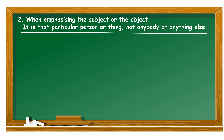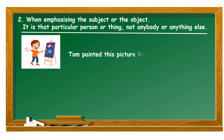The second reason to use a reflexive pronoun is when we want to emphasize the subject or the object in our speech — to show that it's that particular person or thing, not anybody else or anything else. For instance, 'Tom painted this picture himself.' We have used the reflexive pronoun 'himself' because we want to emphasize that it's Tom who painted the picture, not anybody else.